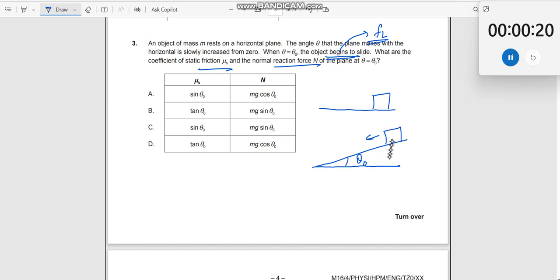Draw the free-body diagram. Mg is acting downwards, then normal force is perpendicular to this plane, and then if this is angle theta.